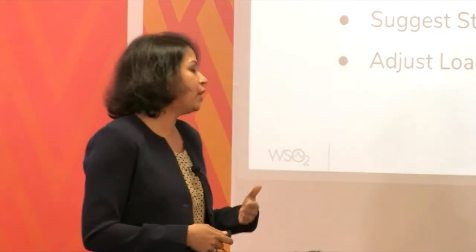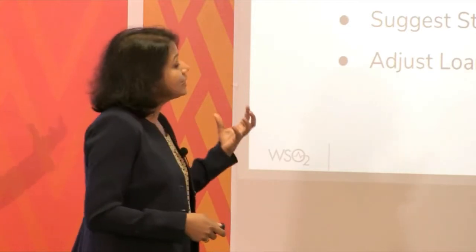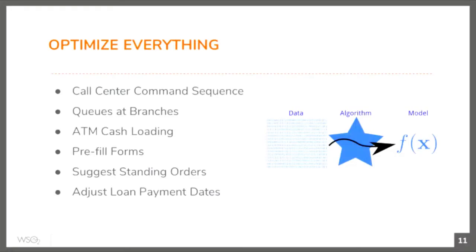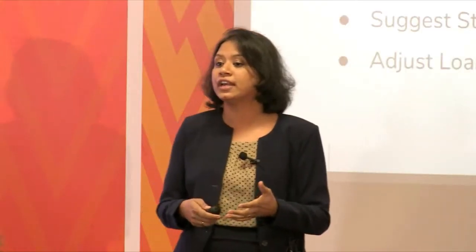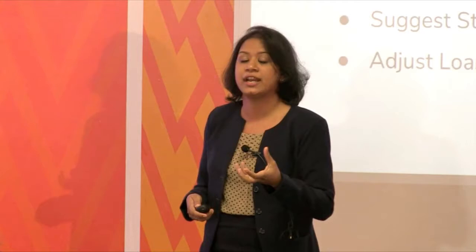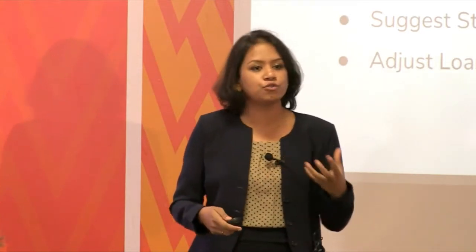Another aspect of improving operations is using the data generated at each customer touchpoint to optimize everything: call center command sequences, queues at branches, ATM cash loading — whatever the data source, use machine learning algorithms and real-time queries to optimize how things are done.